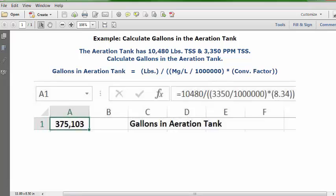Go to the formula bar and type this formula: =10480/((3350/1000000)*(8.34)). That's equal sign, 10,480, division key, two open parentheses, 3,350, division key, 1 million, closed parenthesis, multiplication key, open parenthesis, 8.34, and two closed parentheses.